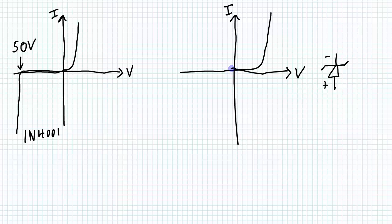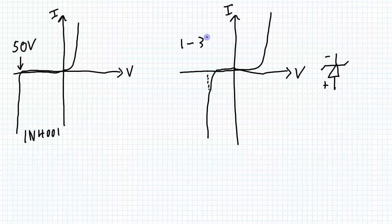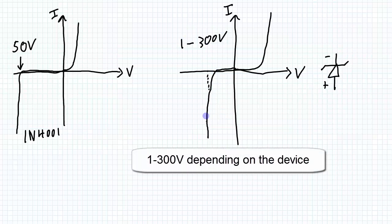Going in the negative direction, as the voltage starts getting negative, there's going to be some voltage beyond which the diode turns on and current starts to flow — this is called the Zener voltage. The difference with a Zener diode is they can be designed so that this turn-on point can be any voltage across a large range. Looking at DigiKey, you can find Zener diodes rated from 1 to 300 volts. These diodes are typically used in the reverse bias manner, so the Zener voltage is given as a positive number.